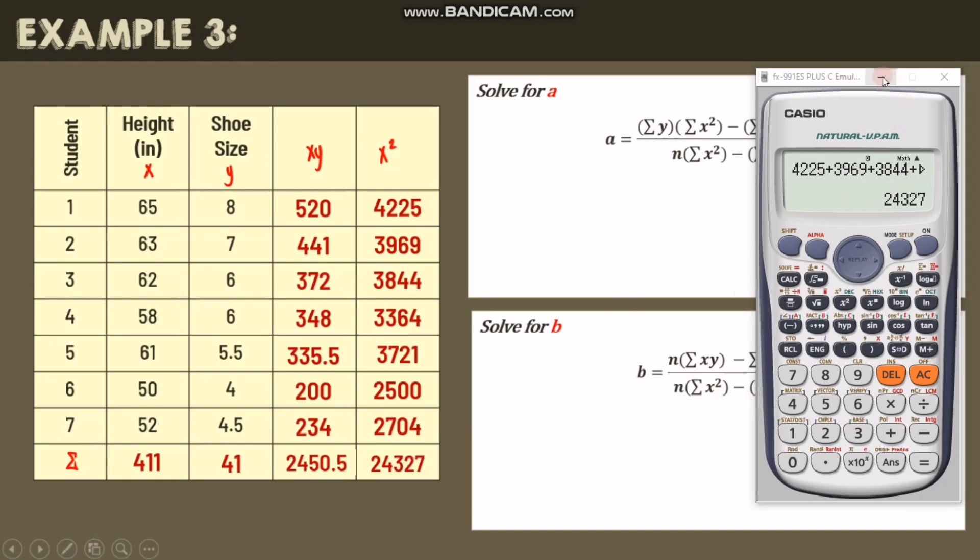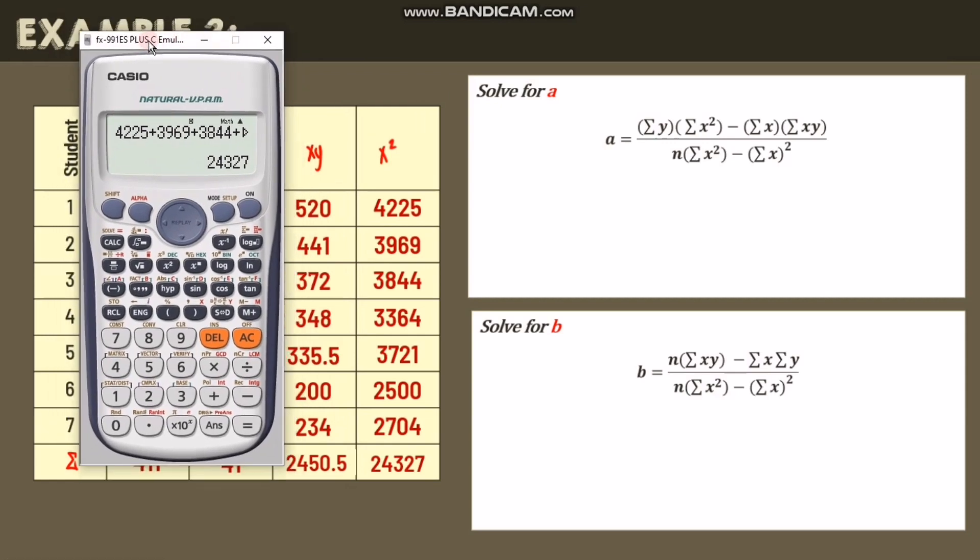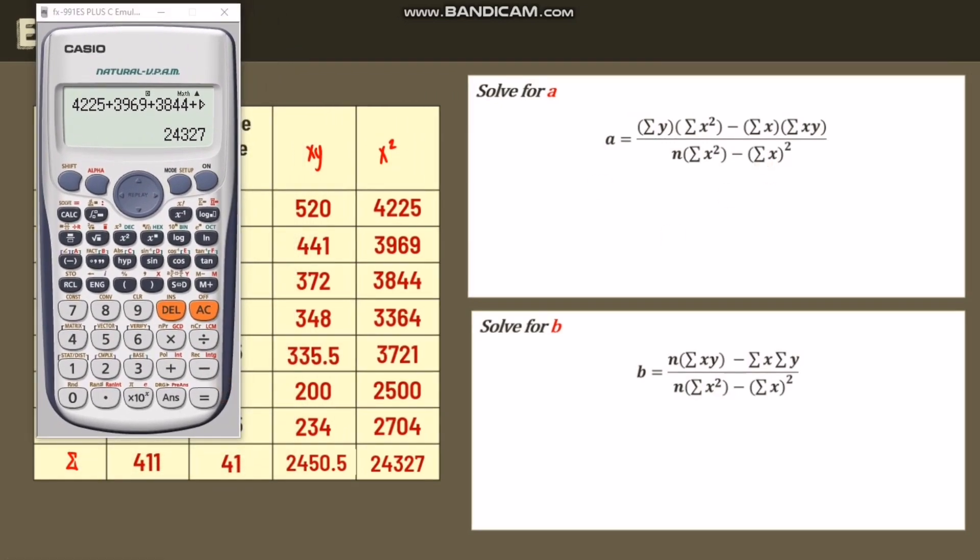After that, we'll put that in our formula for a. Let's compute a first. So we have a equals summation of y which is 41 times the summation of x squared which is 24,327 minus summation of x which is 411 times the summation of xy which is 2,450.5. All over n which is 7.